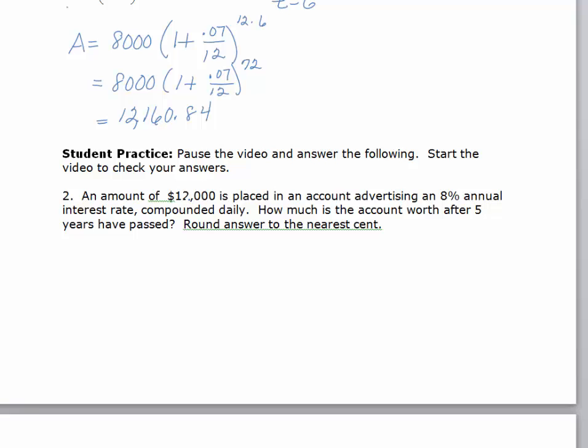Okay. So in this case, we've got a problem that is going to be compounded daily. We've got an amount of $12,000, 8% annual interest rate. And we want to know how much is in the account after five years. So I'm going to first going to write down the formula.